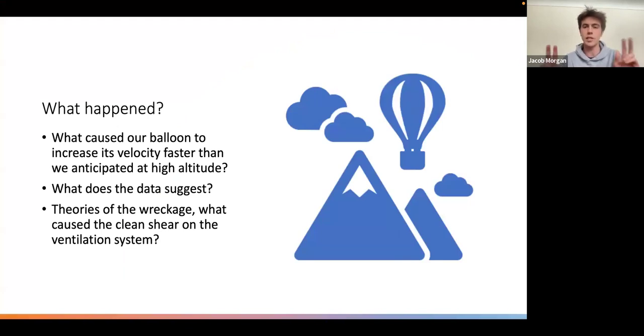To give a quick recap on what happened, our balloon seemed to be ascending at a very fast rate, faster than we normally anticipate. Our ventilation system also seemed to be unresponsive. With those two things combined, our balloon ended up bursting and falling back down to Earth before totality, unfortunately.